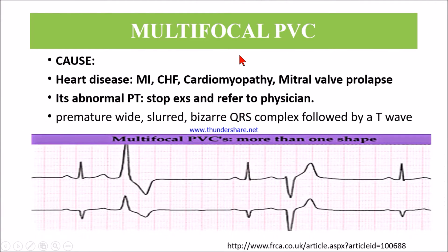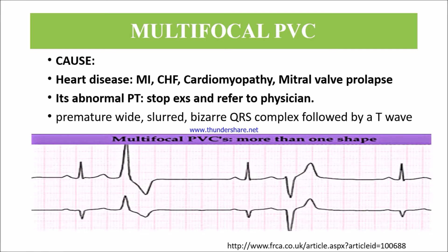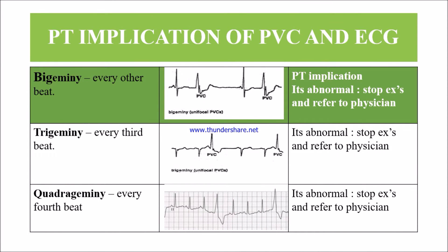Let's see multifocal PVC. The causes include heart disease such as myocardial infarction, cardiomyopathy, and mitral valve prolapse. On ECG, multifocal PVC shows more than one shape — the complexes are premature and wide, showing a slurred, bizarre QRS complex followed by a T wave. As physiotherapists, we need to know the physiotherapeutic implications for PVC on ECG.